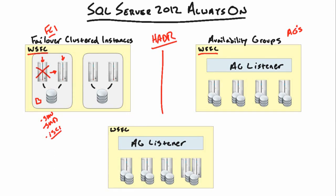What makes FCI shine in Always On is multi-subnet failover. Let's say subnet one and subnet two are geographically separated sites halfway across the world. This is where we sprinkle some DR into our HA. In a single subnet, if our instance goes down the cluster just switches and users never know. But we still have a single point of failure — if our shared storage or SAN goes down, we're out of luck.